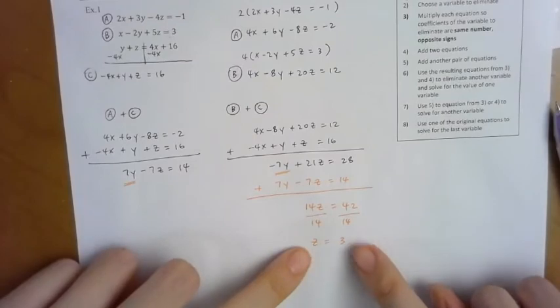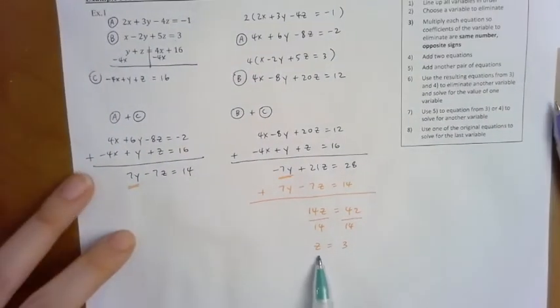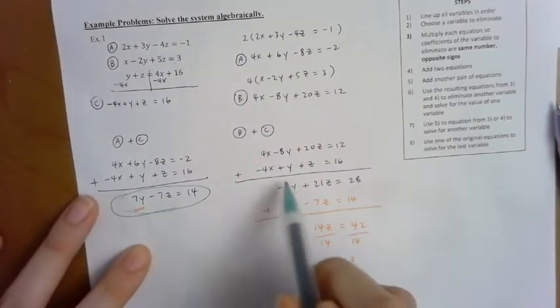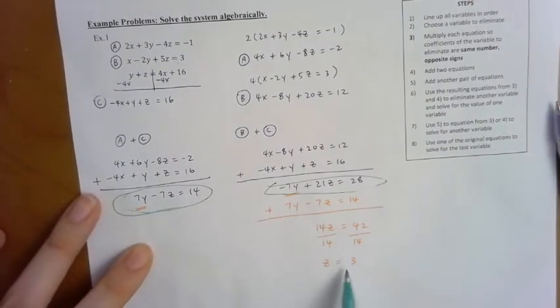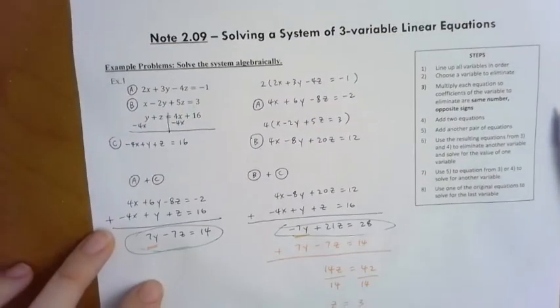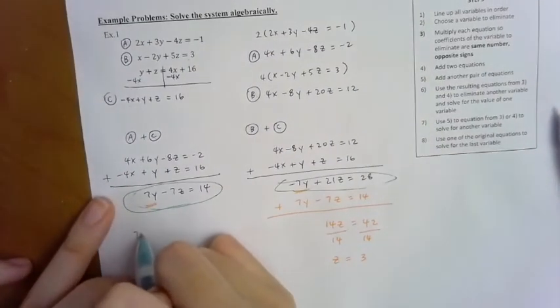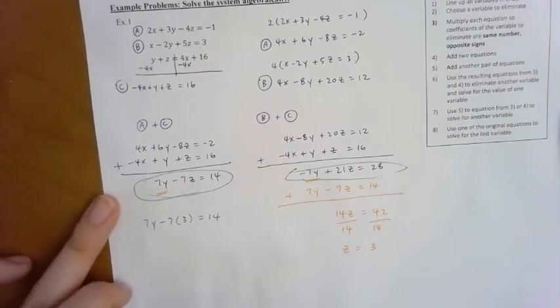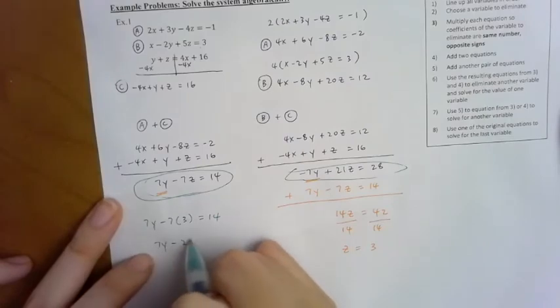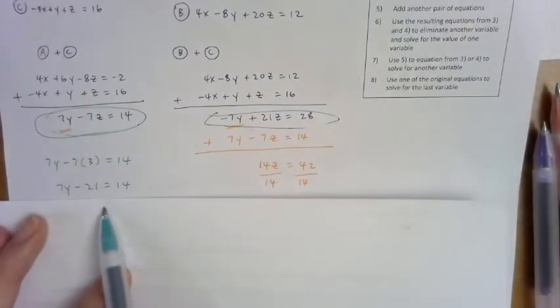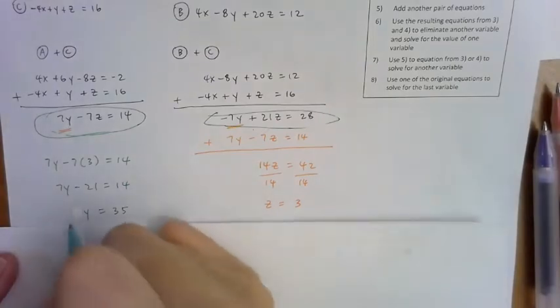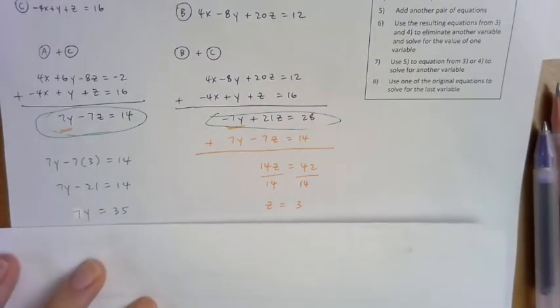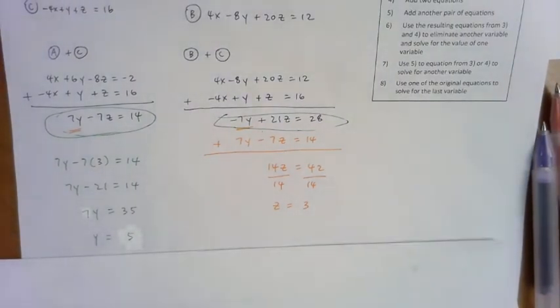Once we find the variable z, now what we're going to do is we're going to actually go back to one of these equations. Okay the equation with two variables. I cannot use the one from before. Okay so I'm going to just use this one, 7y minus 7z which is 3, and then go ahead and solve it. Simplifying, add 21 on both sides. I got 7y is equal to 35. Divide both sides by 7. I get y equals 5.